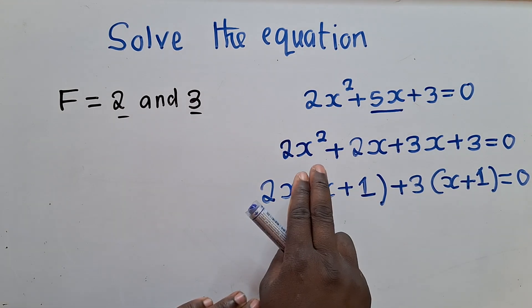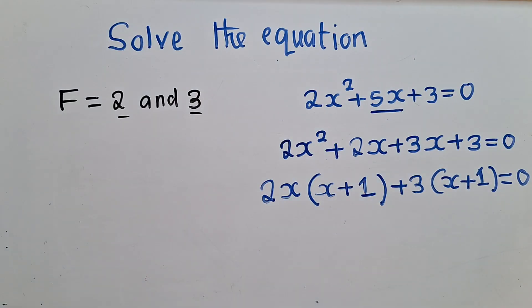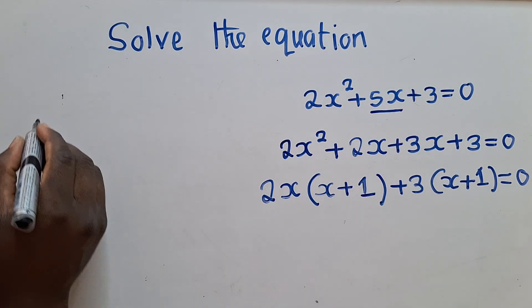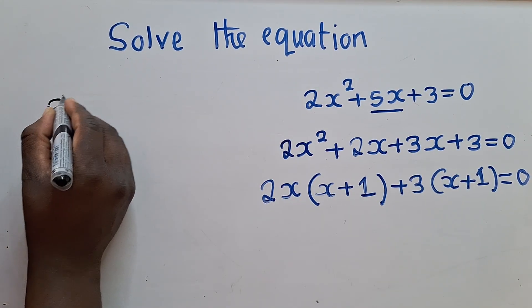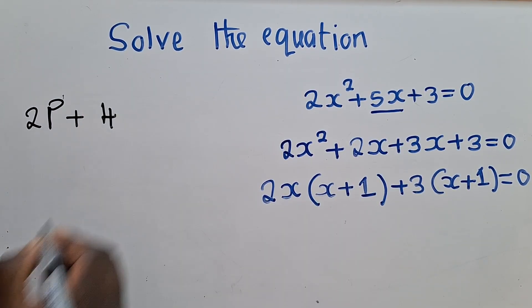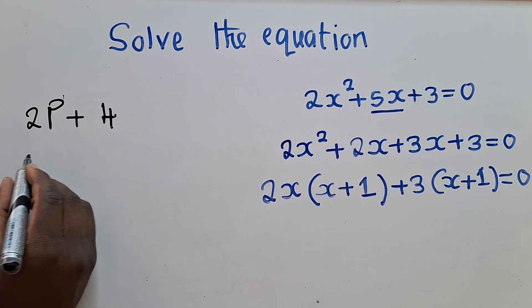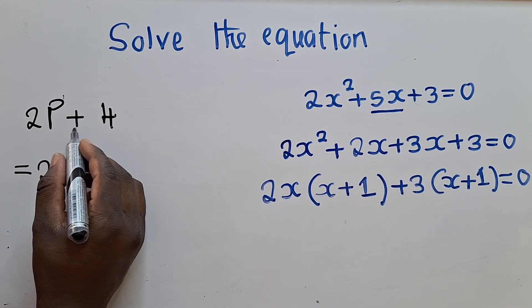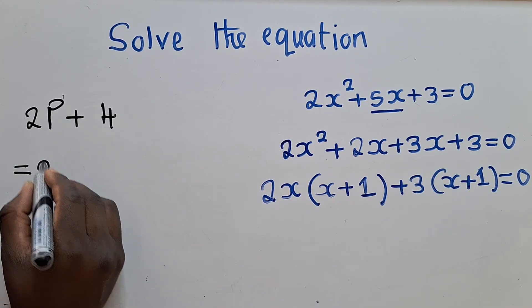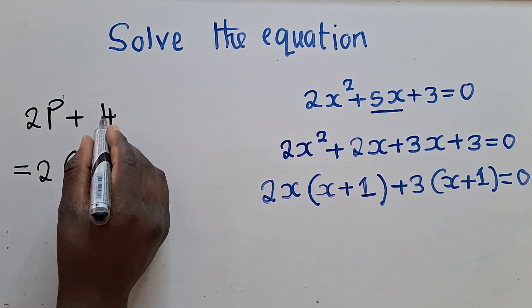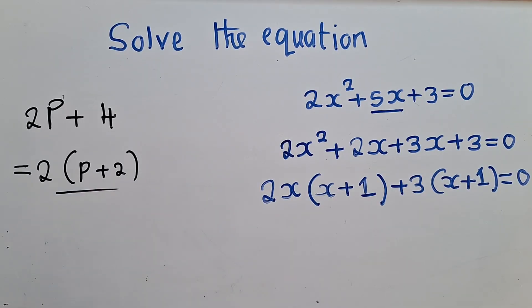To those people who are not understanding what is happening here, what I've just done here, it's something that looks like this. Let's say you've got 2p plus 4 and they ask you to factorize. You are going to say 2 is what is common. It's found here and here. So you can say 2 into 2p. It will just be a p. 2 into 4, it will be a 2. It means you factorized.